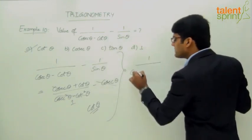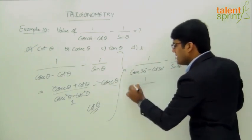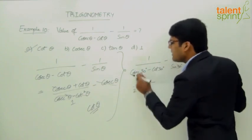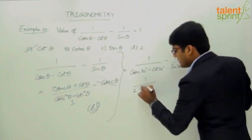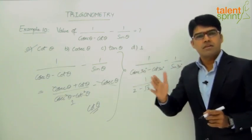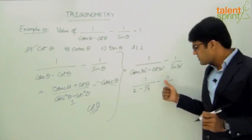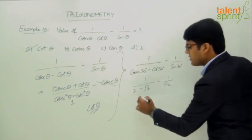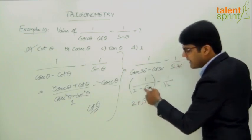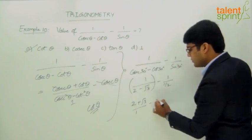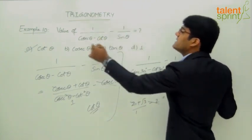Substituting gives: 1 by cosecant 30 minus cot 30, minus 1 by sine 30. Cosecant 30 equals 2, so 1 by cosecant 30 equals 1 by 2. Cot 30 is root 3. Sine 30 is 1 by 2, so 1 by sine 30 is 2. The first term becomes 1 divided by 2 minus root 3. Rationalizing this gives 2 plus root 3 divided by 4 minus 3, which equals 2 plus root 3. Subtracting 2 gives root 3. So by substituting theta equals 30 degrees, the value of the expression equals root 3.